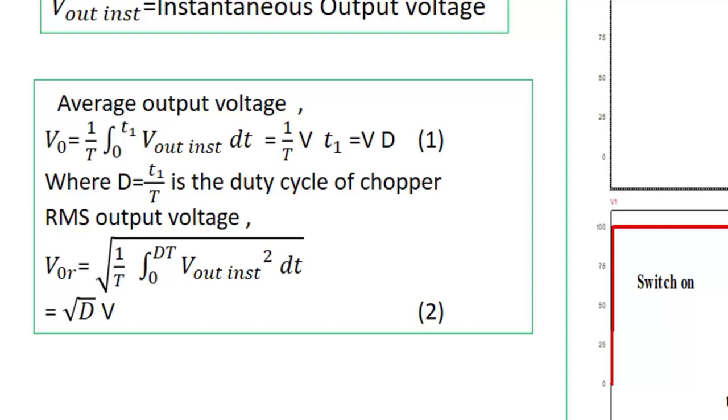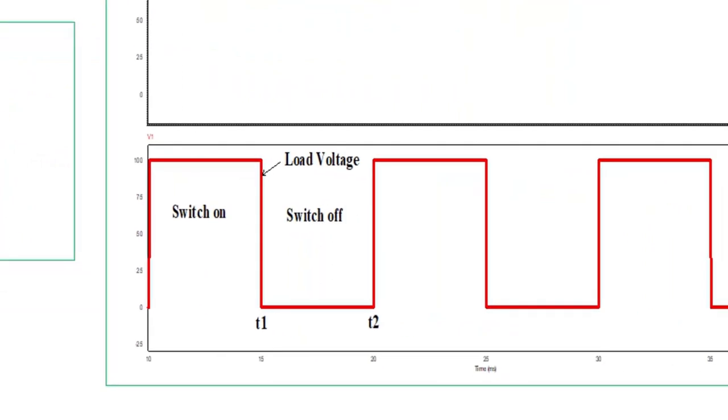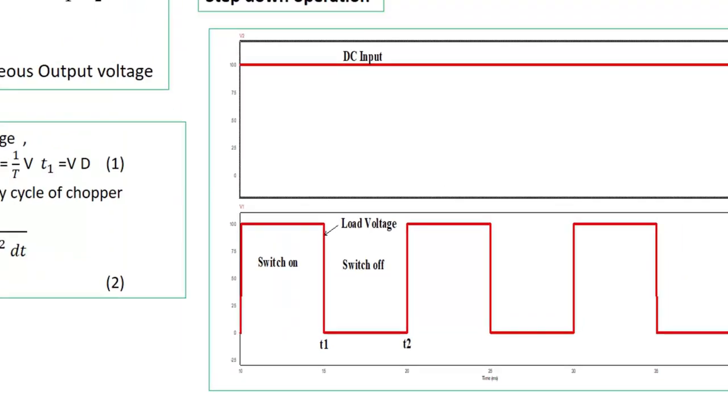Now one thing I want to say: the output voltage is in terms of pulses. These are not usable form. You cannot use these pulses for different applications. Smooth DC output voltage is required. To get a smooth DC output voltage, these pulses are to be filtered out using inductor and capacitor.